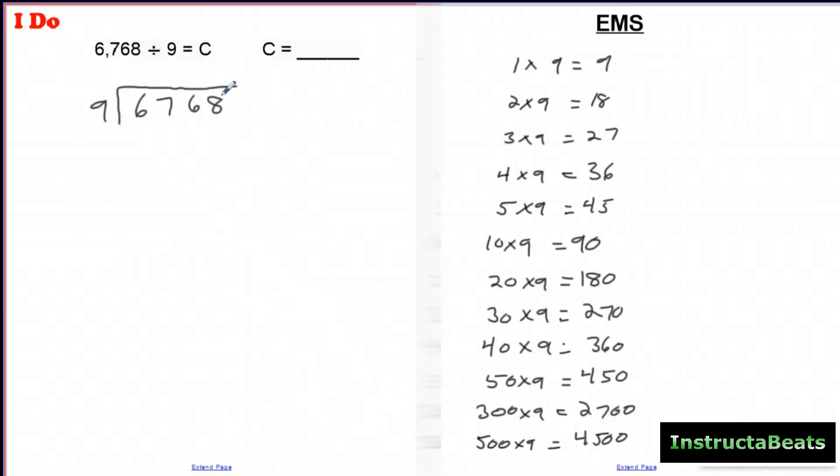I'm going to go ahead and stop there because I'm out of room. Some of you already figured out that you can even do one more step and take a bigger chunk. But using your easy multiple sheet, remember our rule of thumb is that we want to take the biggest chunk out possible. I'm going to pretend right now like I only know my fives facts, which is why I used 1 through 5, 10 through 50, and then 300 and 500.